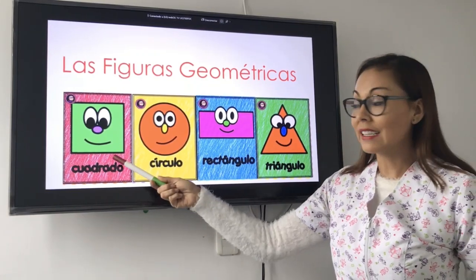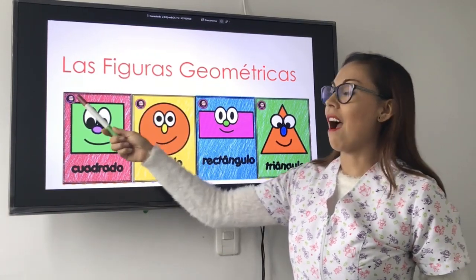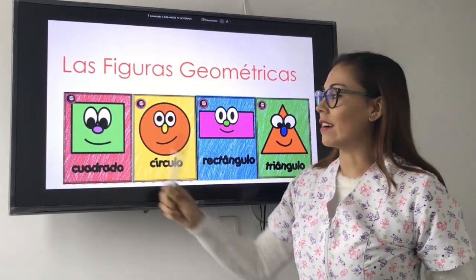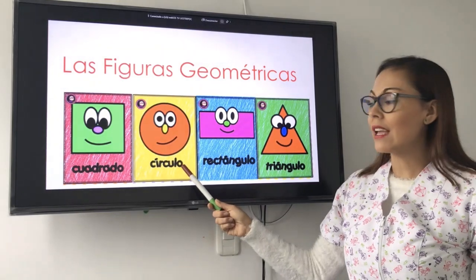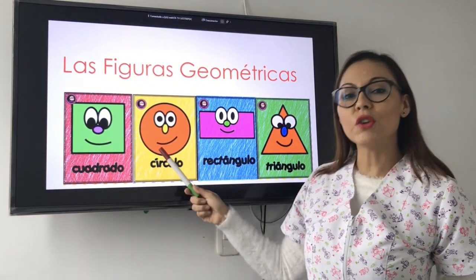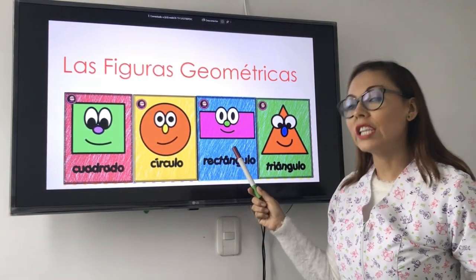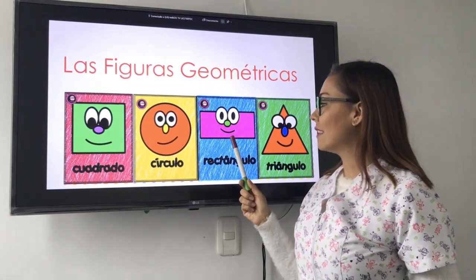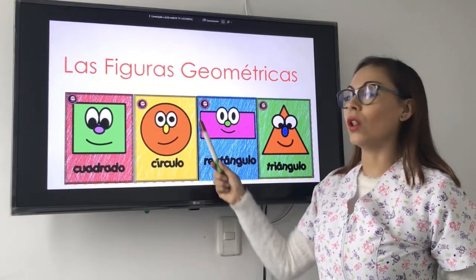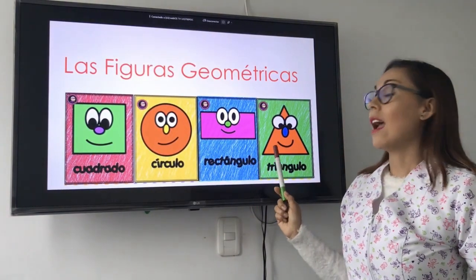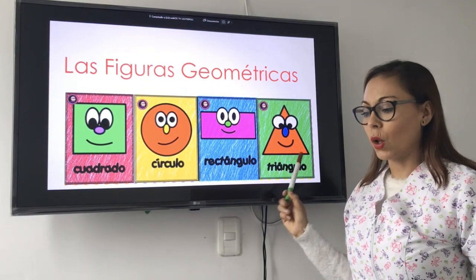What do you see? I see a square. What do you see? I see a circle. What do you see? I see a rectangle. What do you see? I see a triangle.